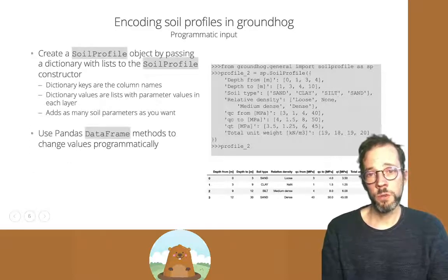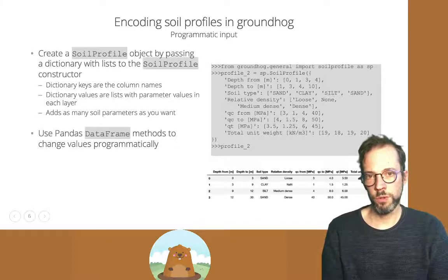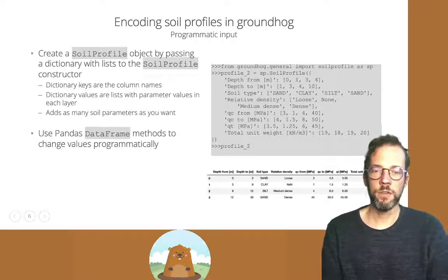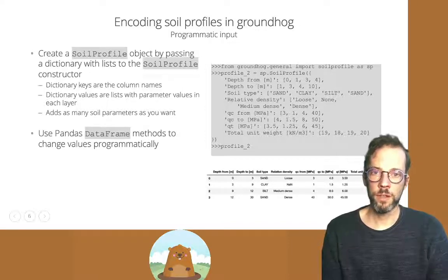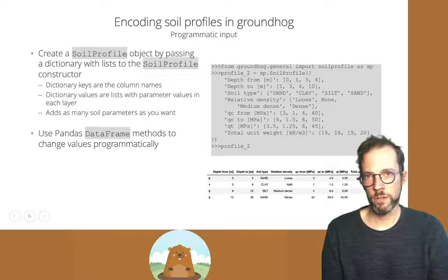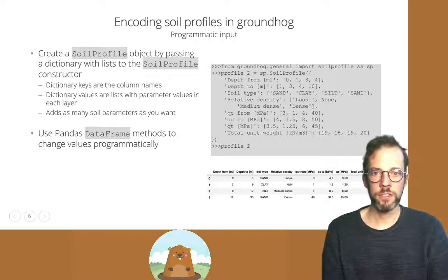We can also import soil profiles programmatically by passing a dictionary to the soil profile constructor. That dictionary has column names as keys, and the values are lists of equal length with the parameter values. You can add as many soil parameters as you want. If you want to change values programmatically, use the Pandas syntax for that — check out the documentation for details.